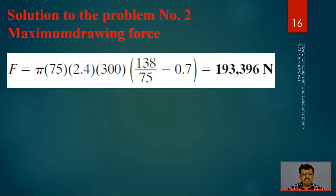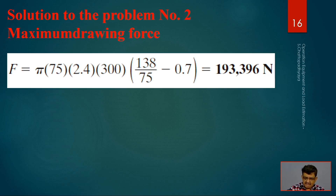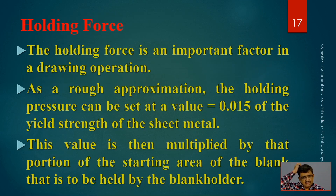Putting all the values into the drawing force formula — DP = 75, t = 2.4, Ts = 300, and DB/DP = 138/75 — with correction factor 0.7, we get the drawing force of approximately 193,396 Newtons. We put all the given information into the formula and calculate that force.